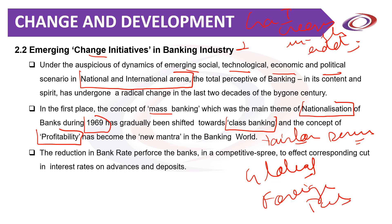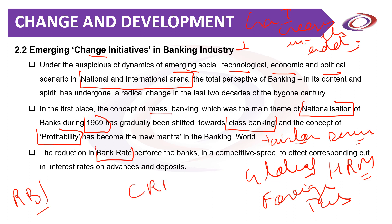Various steps were taken by RBI, such as the reduction of bank rate and the reduction of cash reserve ratio in phases, to increase the loan-giving capability of banks and give a competitive edge to public sector banks. Interest rates were reduced by RBI to increase bank profits. Although the set goal has not yet been fully achieved, the process is working towards more measures to increase the profitability of banks.